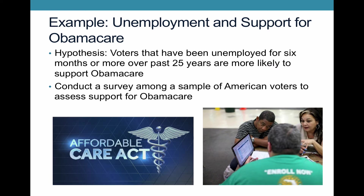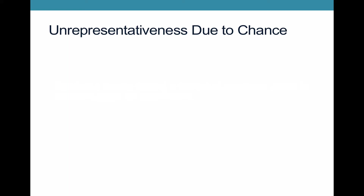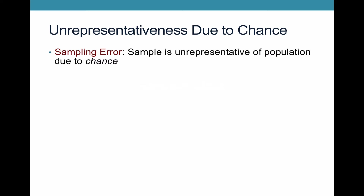We're going to think about ways in which this study could go awry — what are some ways this survey could face problems if the sample was not representative? First, you might have a sample that's unrepresentative of the larger population due to chance, just due to some sort of fluke. This is called sampling error: when your sample is unrepresentative of the population due to chance.